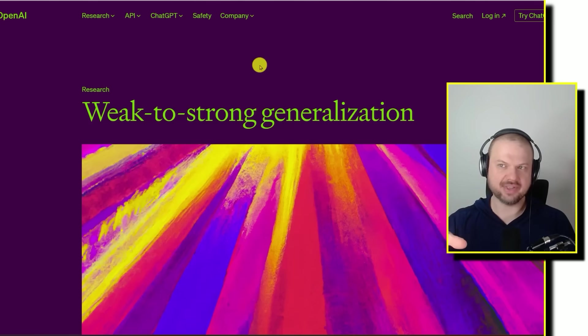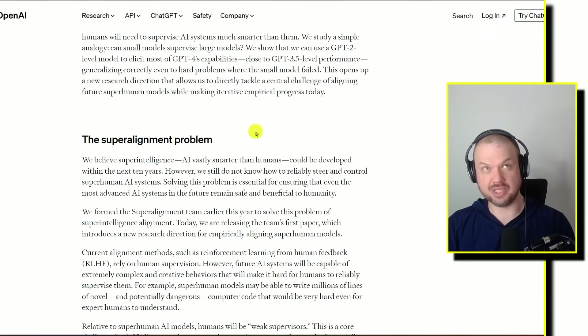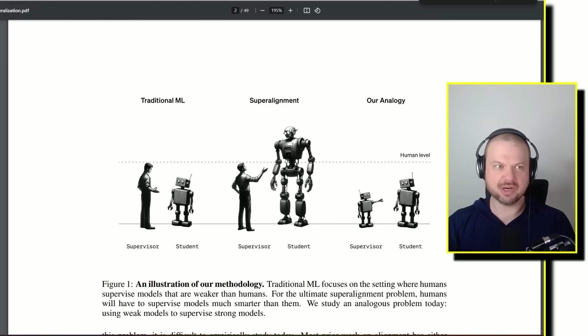And right around the same time that OpenAI released this paper, they released another one called weak to strong generalization. And so it's part of their super alignment. How do we make super intelligence safe? And so in this paper, they're talking about an approach that seems to be having some results. And so traditionally, you can think of this as a human supervisor. So this dotted line, that's sort of the human level intelligence, right? So the supervisor, the smart human is teaching the AI that is not as smart as the human.